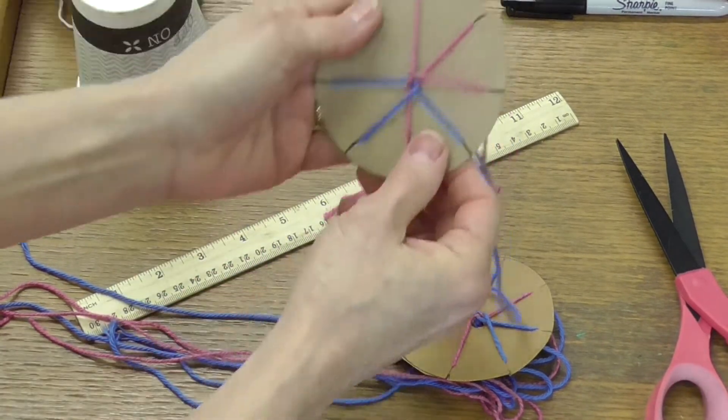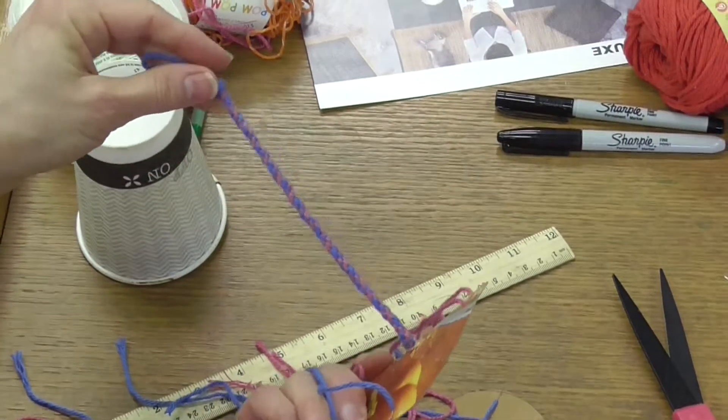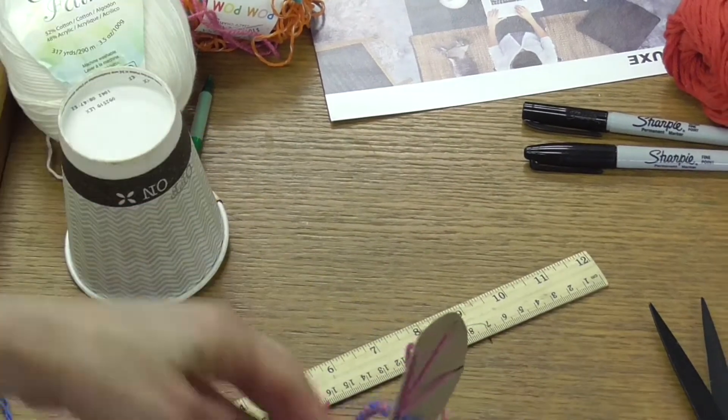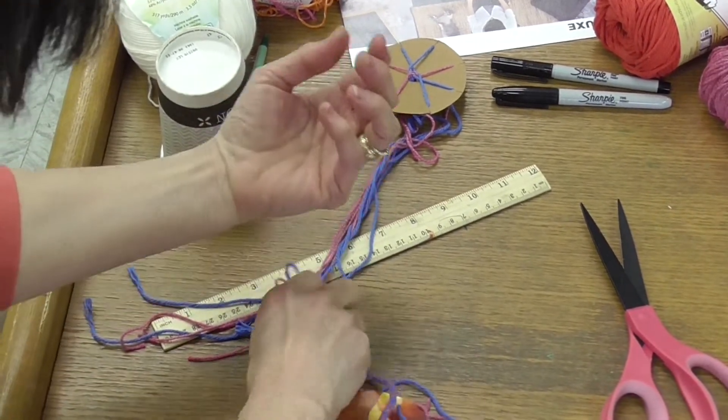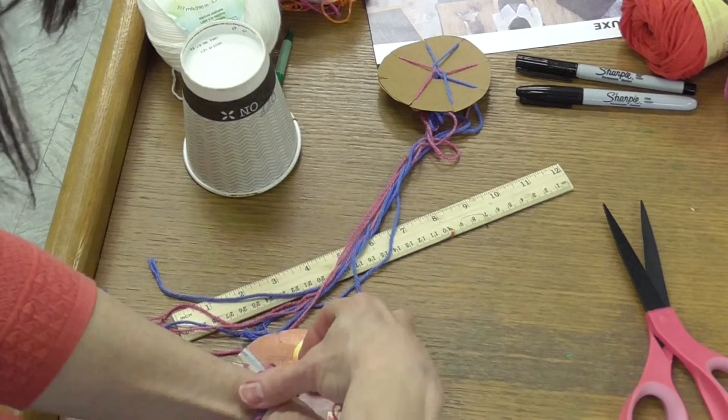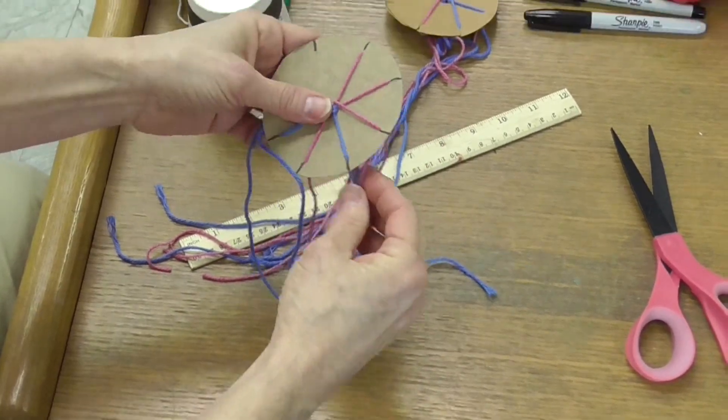Here's when I started earlier, and we're getting, now you can see the bracelet coming through. When you're happy with the length, and I usually just measure my wrist to see if I've got enough, then I'm ready to take it out. I'm going to unhook.